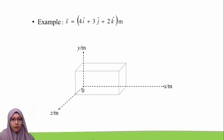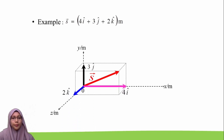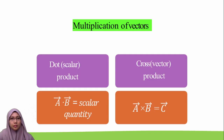Here is an example of how we express a vector. For vector s, we write it as 4i hat plus 3j hat plus 2k hat. As we know, vectors can be added and subtracted, and they can also be multiplied. There are two types of vector multiplication: scalar product, also known as dot product, and cross product.